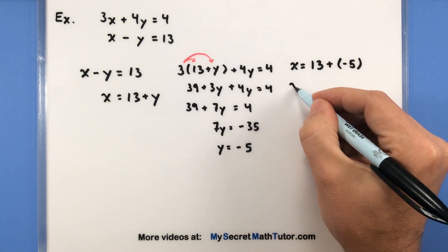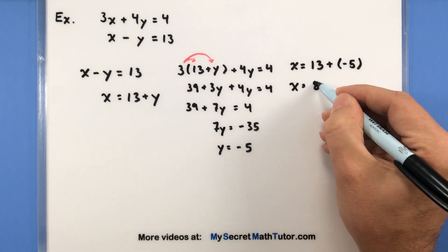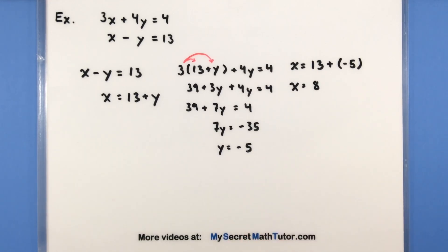All right, so that looks pretty good. Let's go ahead and combine the 13 and the negative 5, and that'll give us an 8, and now we have our solution. We have that x is equal to 8, and y is equal to negative 5.